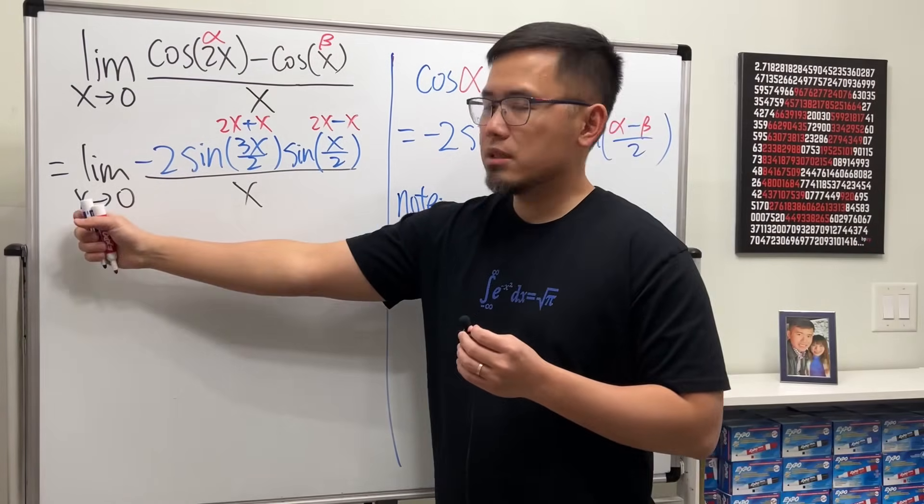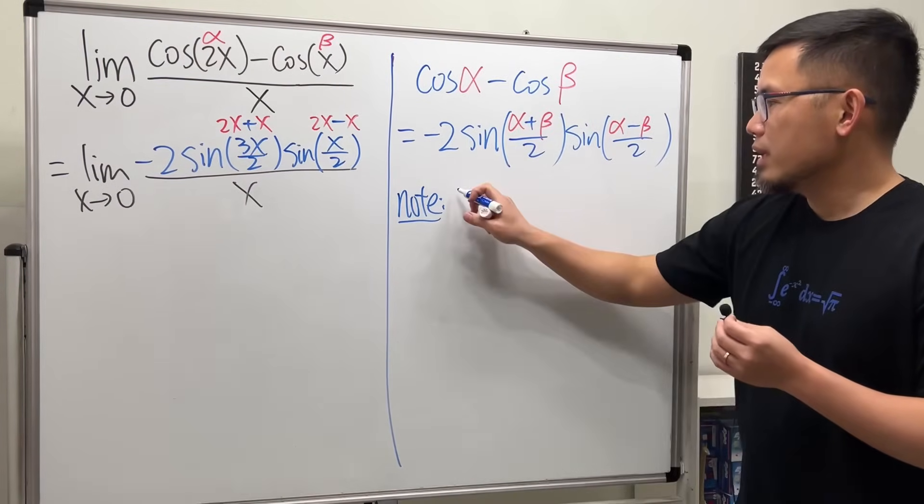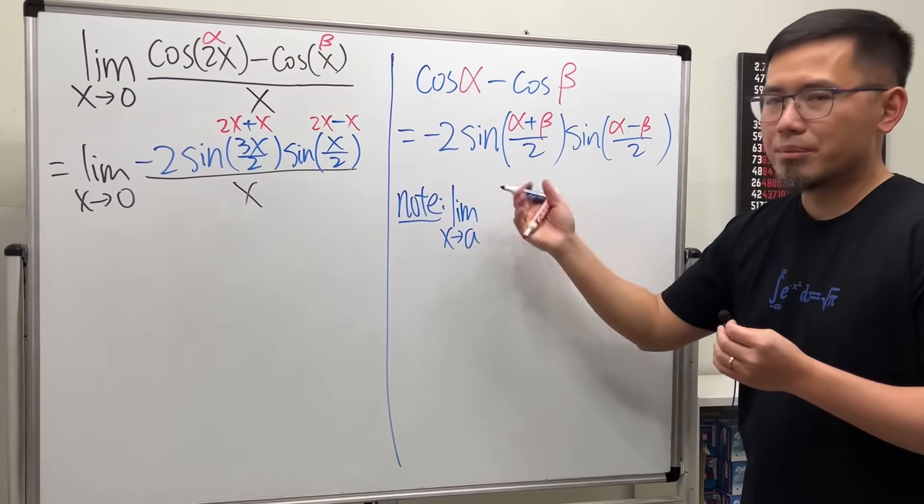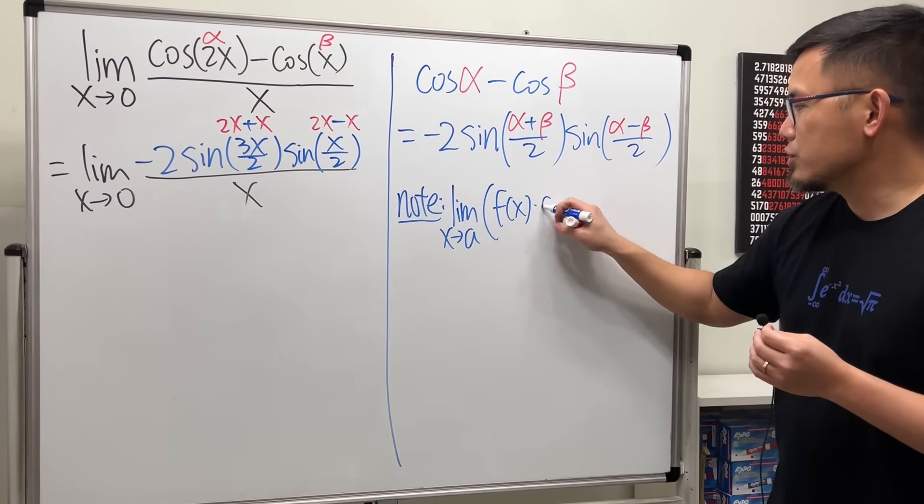Limit of a product, it's the product of the limits. So I'll write that down. If we have the limit, let's say as x approaching some number a, of two functions, let's say f of x times g of x, this right here is equal to the limit as x approaching a of f of x, so do this first...